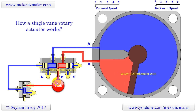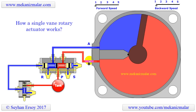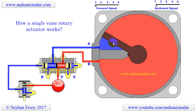In the counterclockwise rotation, the roles of port A and B are reversed. One may design a circular reciprocation system by using hydraulic or pneumatic cylinders — so why is there a need for a rotary actuator? First, a rotary actuator makes the system much simpler than a custom-made cylinder-based rotary actuator.